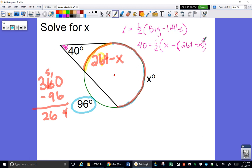Now let's solve. Let's get rid of the one half by times by 2. So 80 equals x minus 264, but also minus negative x. And minus a minus, I hope you understand, is a plus.